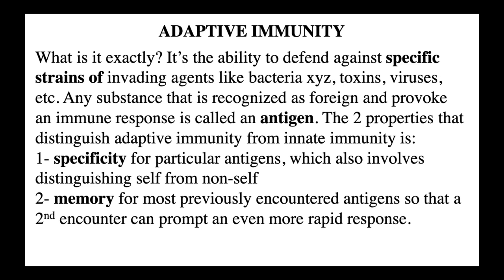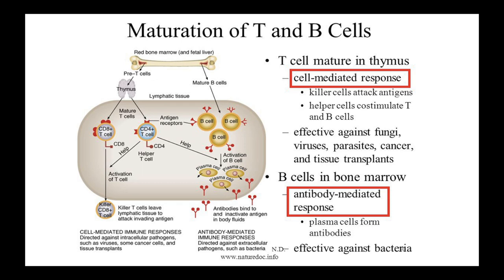The two properties that distinguish adaptive immunity from innate immunity are specificity and memory. Specificity for particular antigens, which also involves distinguishing self from non-self. And memory for most previously encountered antigens so that a second encounter can prompt an even more rapid response. There are three cells we'll talk about: T-cells, B-cells — your lymphocytes — and dendritic cells, your follicular dendritic cells.